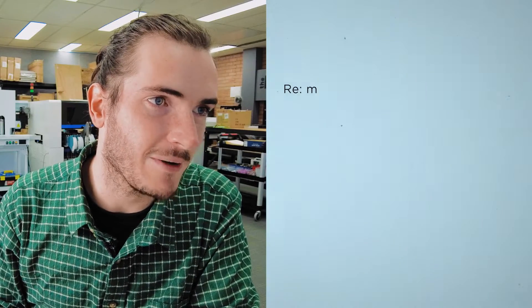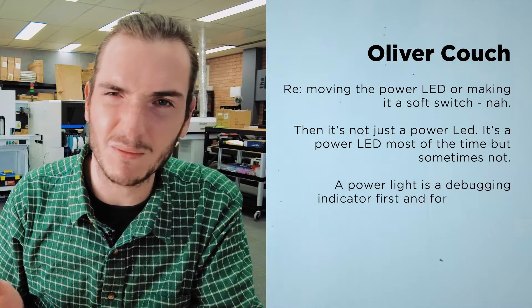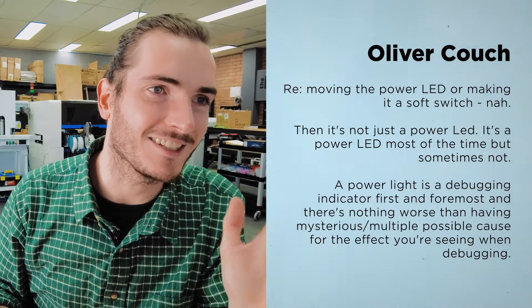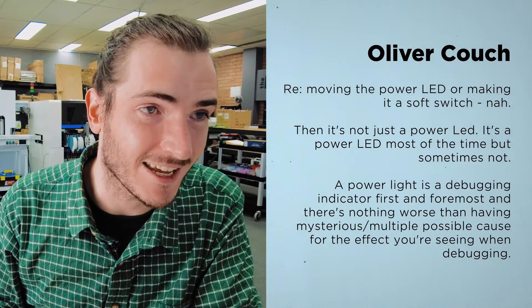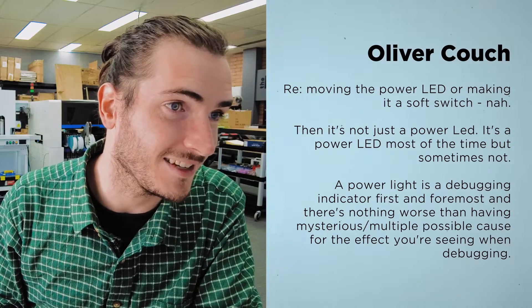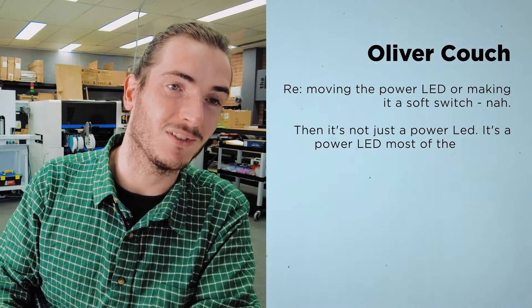First bit of feedback we have is from Oliver, and he says that moving the power LED or making it into a soft-switched LED - no, that's just a power LED. It's a power LED most of the time but sometimes not. A power light is a debugging indicator first and foremost, and there's nothing worse than having mysterious or multiple possible causes for the effect you're seeing when debugging. So what Ollie's trying to say is that the power LED should be just that, because that's the most useful way for it to be used as a debugging tool. If it's on, there's power - and that's debugging step one. Totally agree with that.